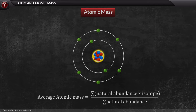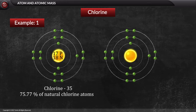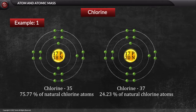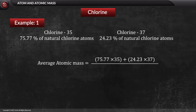Let us take two examples related to average atomic mass. Chlorine consists of two major isotopes: one with 18 neutrons (75.77% of natural chlorine atoms) and one with 20 neutrons (24.23% of natural chlorine atoms). The atomic number of chlorine is 17. The average atomic mass of chlorine equals (75.77 × 35 + 24.23 × 37) / 100, which equals 35.48 amu.